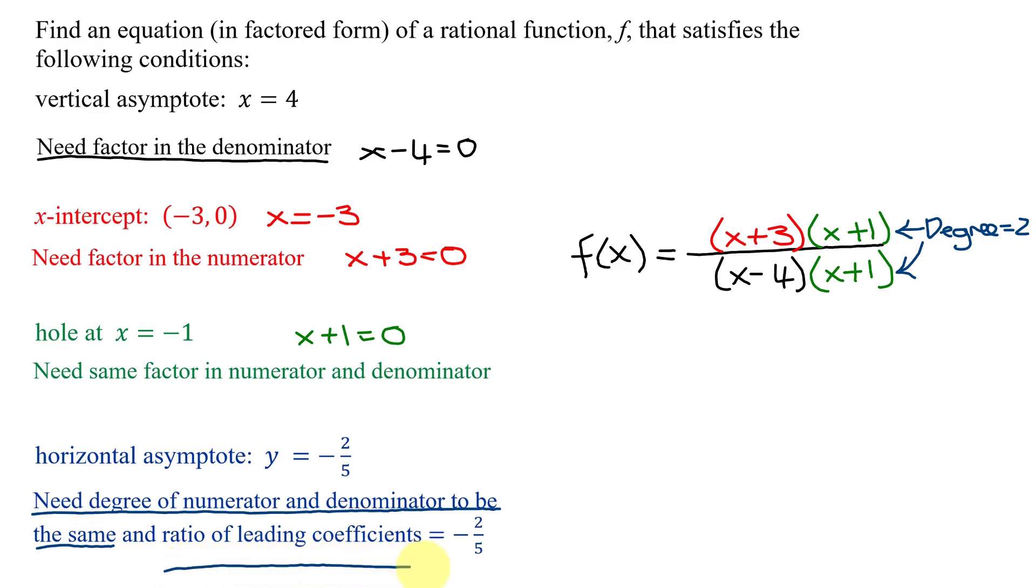And now I need the ratio of the leading coefficients to be negative 2 fifths. So I need my numerator, I need to multiply by the constant negative 2. And in the denominator, I'm going to multiply by the constant 5.